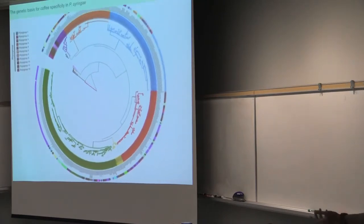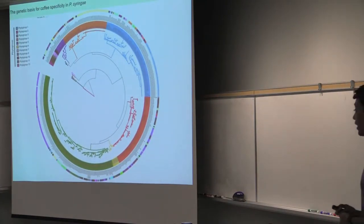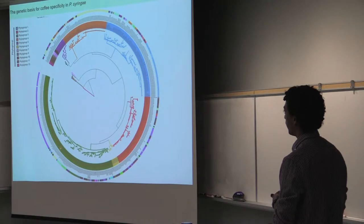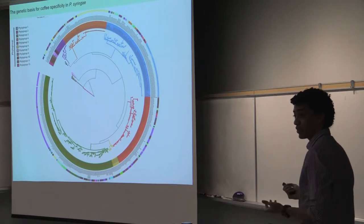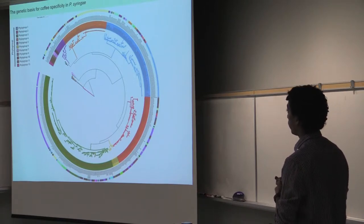So for the remaining of this talk, I'm going to ask you to remember these colors. Phylogroup 3 is green, phylogroup 4 is orange, phylogroup 11 is brown, and the coffee host that we're interested in has this yellow color on the outer circle.